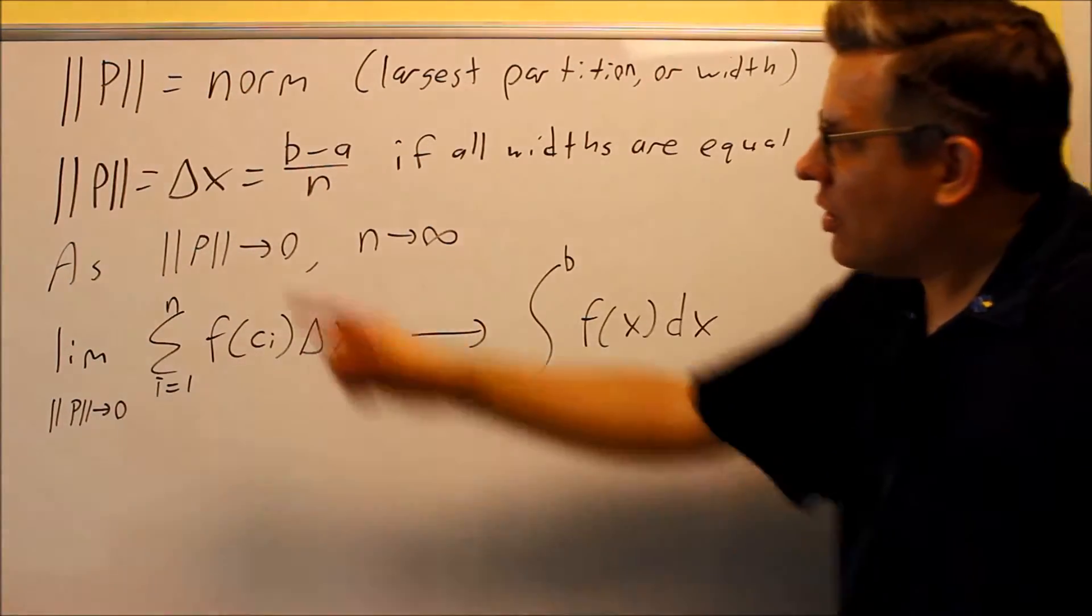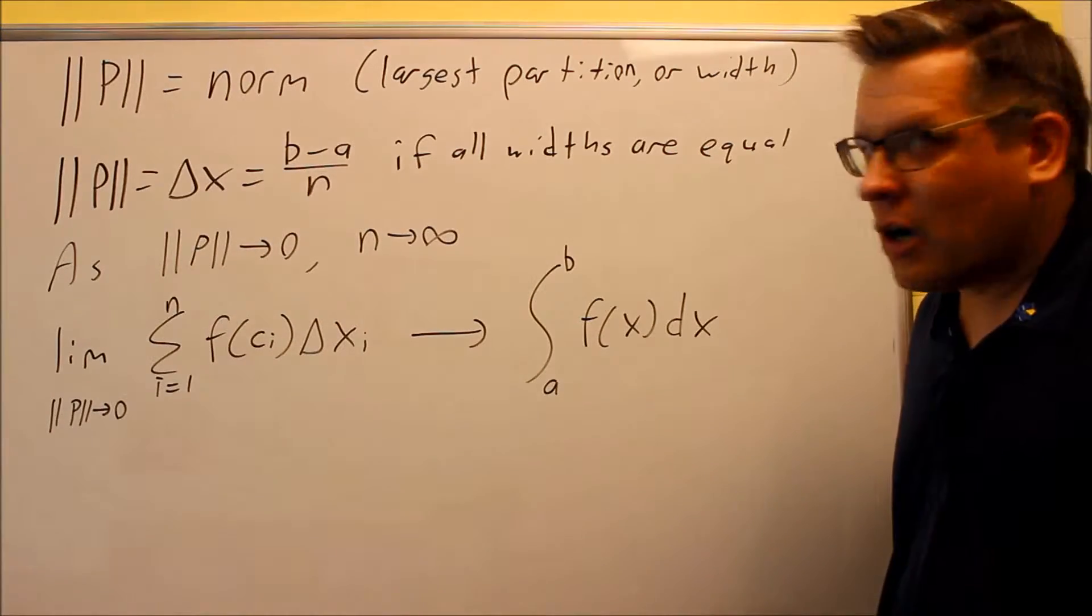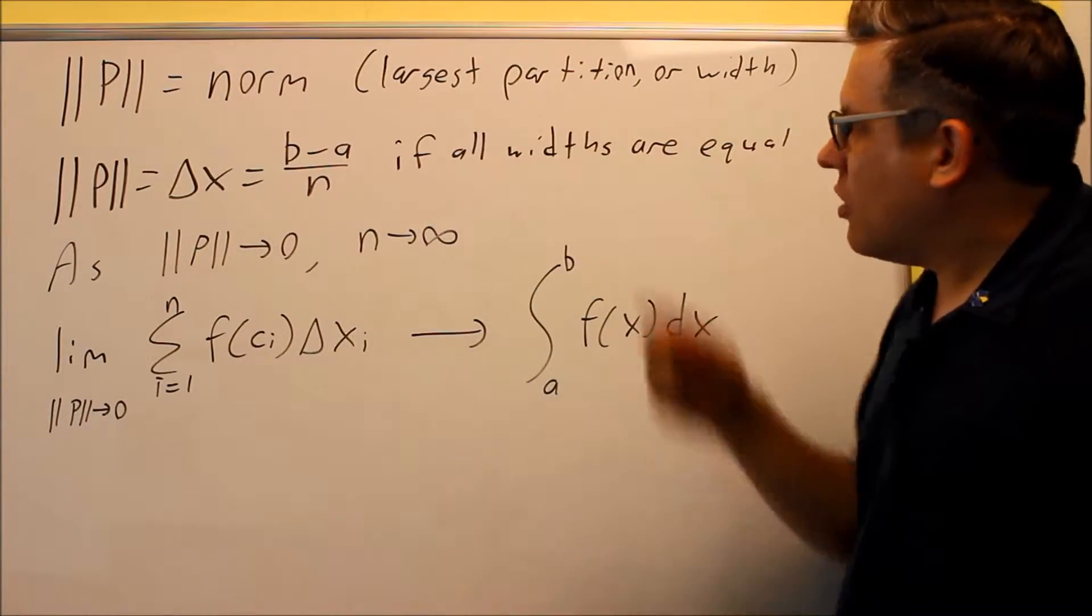Now this means norm. If you have double absolute values around the P, this means norm, and what that is talking about is the largest partition or width.